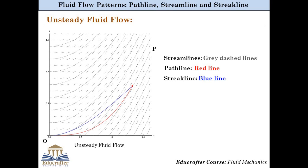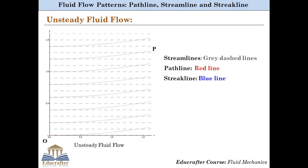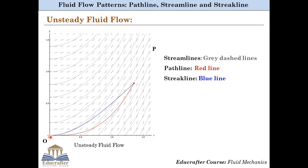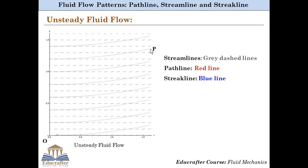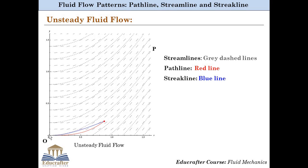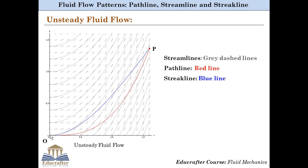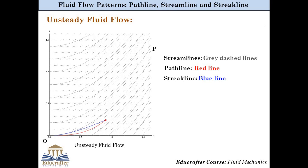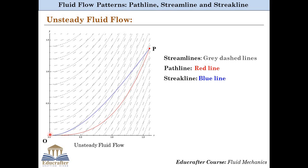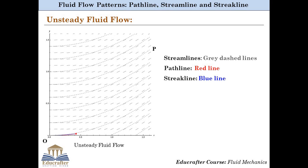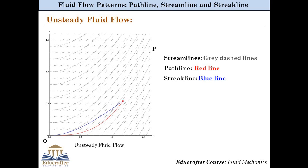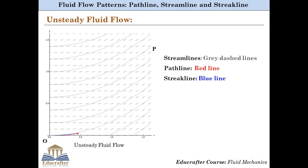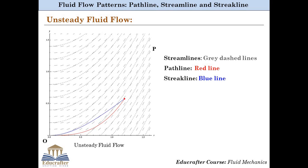The red line is the pathline of a specific fluid particle, indicating the path followed by that particle while traveling from point O to point P. The blue line joins all the fluid particles that are leaving from point O at different instants of time, and hence the blue line is a streakline. As fluid particles leave from point O and move along with the fluid, the streakline changes its location at every instance of time.